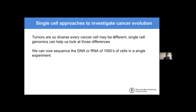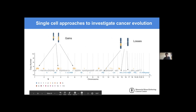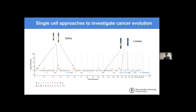We really need single cell technology to look at these differences. With recent advances, we can now sequence the DNA or RNA of thousands of cells in a single experiment. This is an example of DNA copy number in a single cell from a patient's tumor: genome locations are across the x-axis and copy number on the y-axis, showing regions of the genome that have been gained and regions that have been lost. These differences in gains and losses may potentially differ across different cells in the tumor, and using single cell approaches we can look in great detail at how these changes accumulate.